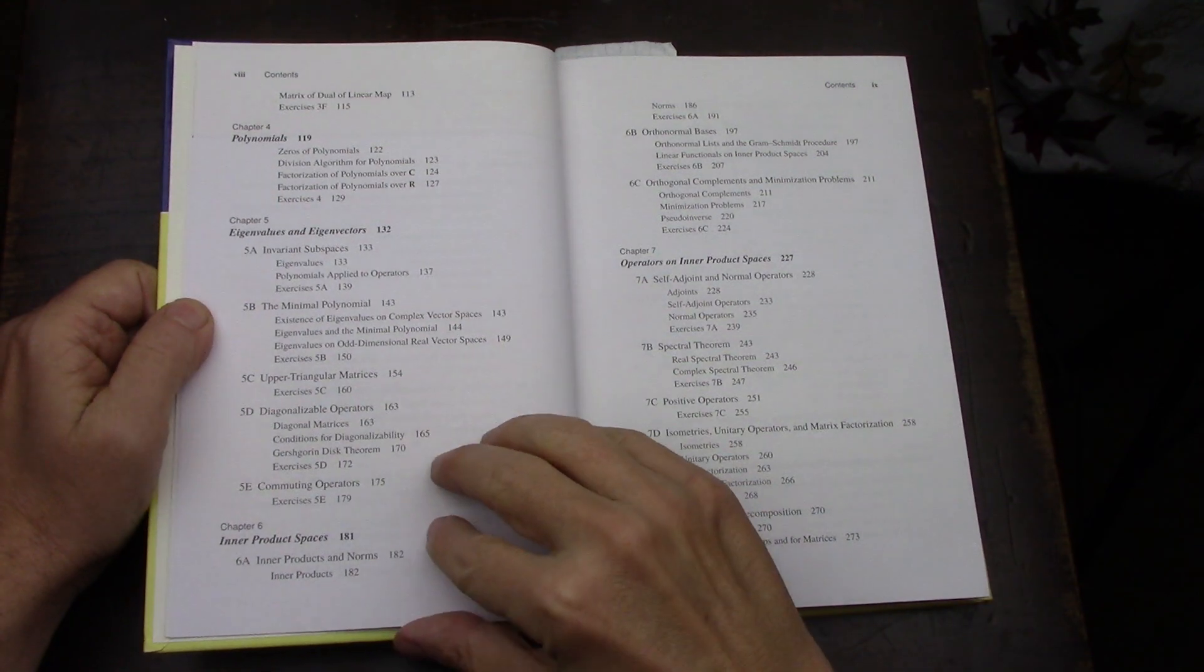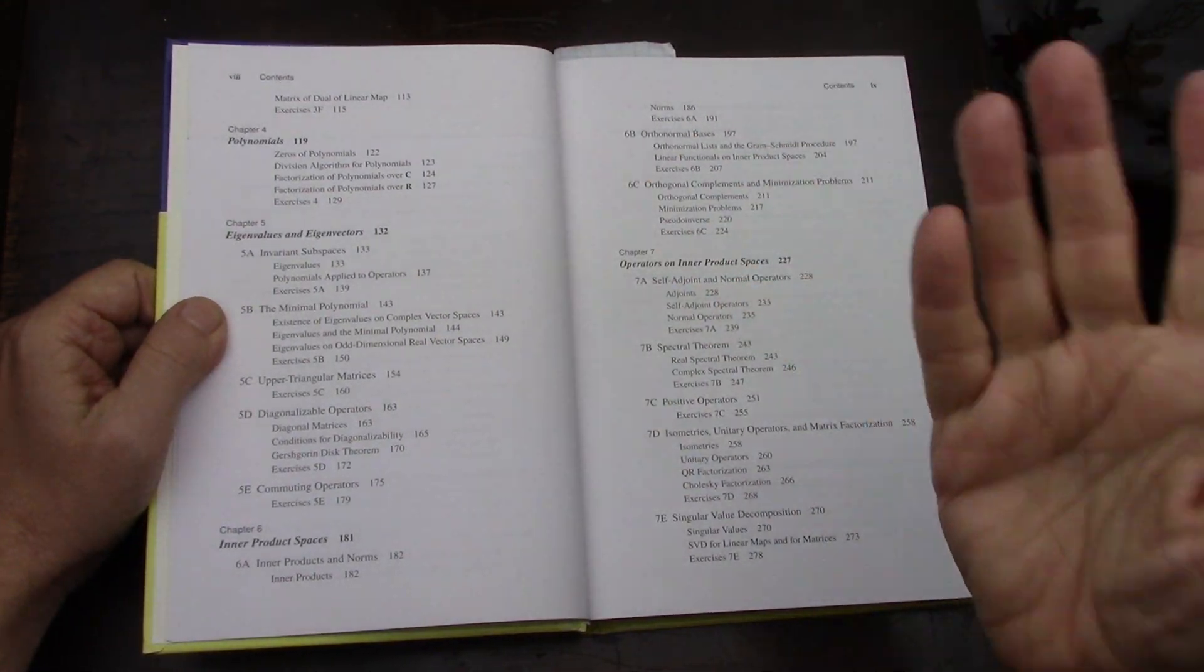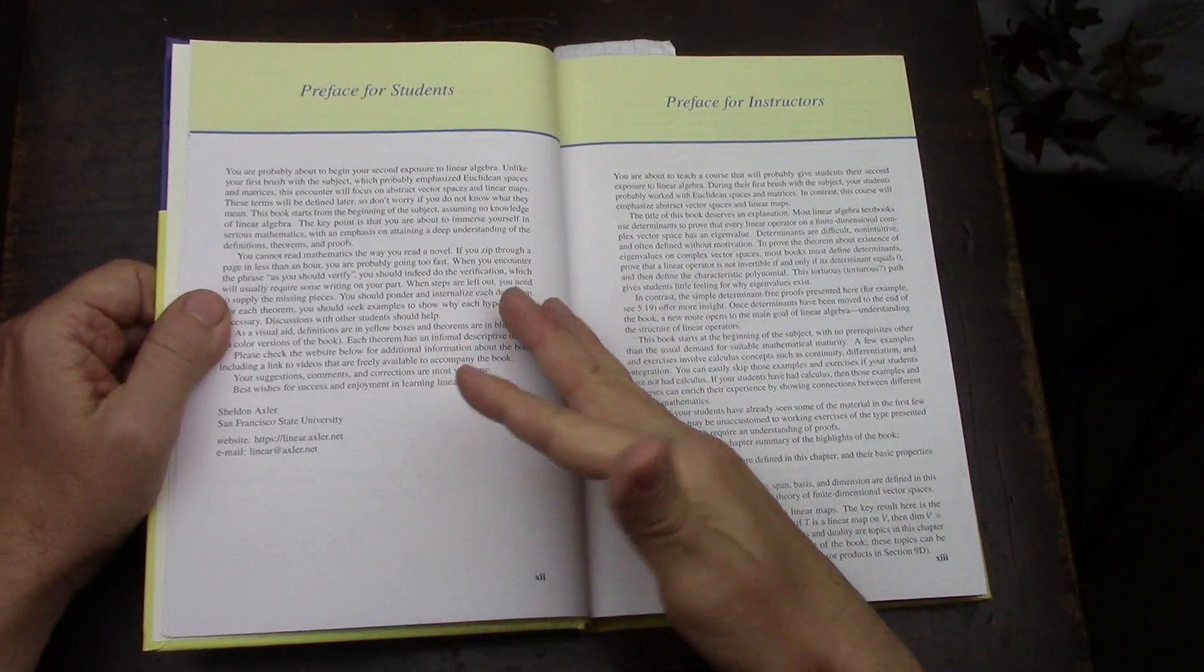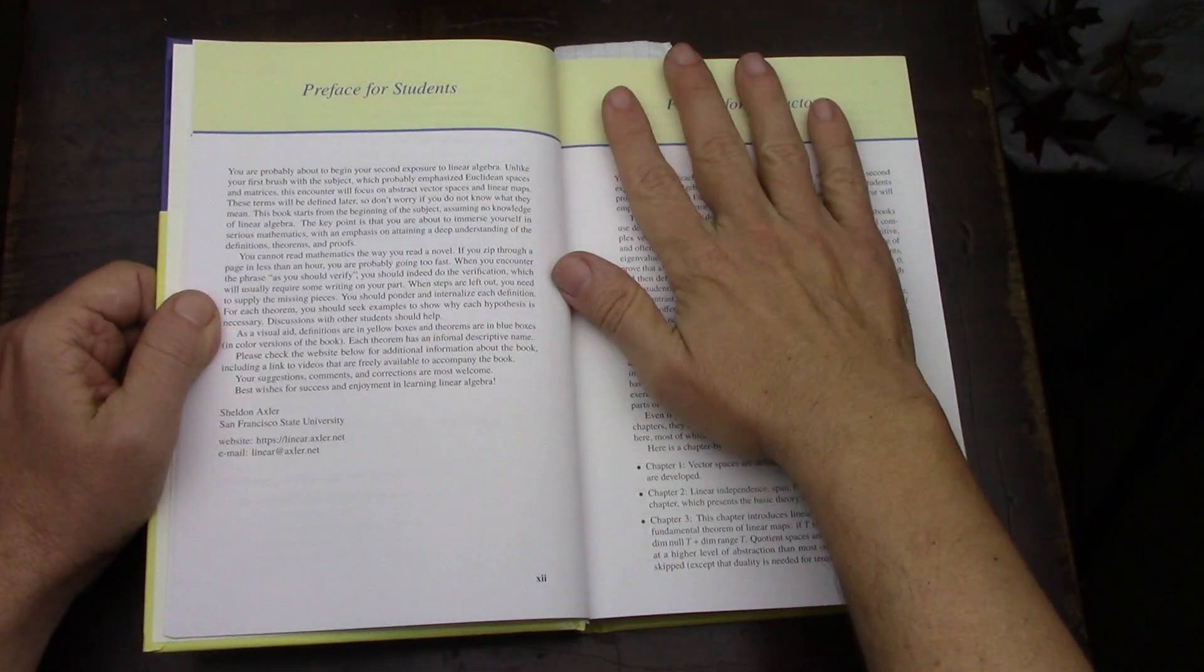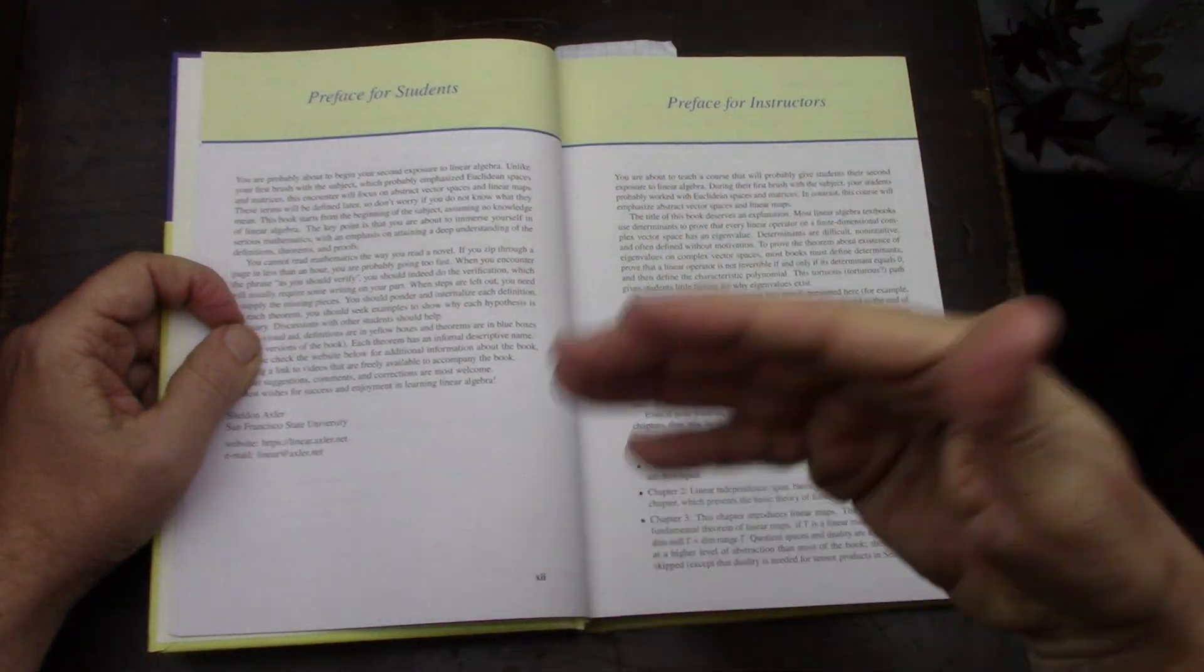I think I've gone slowly enough where you can stop the video and read the table of contents yourself. Professor Axler has made this book available as a PDF on the internet. He's also got a great YouTube channel and if you look him up he's got various links where you can email him.